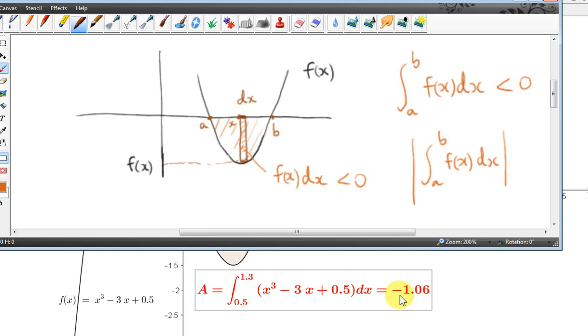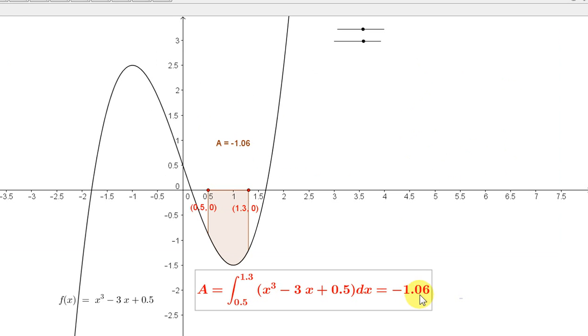In this case, the value of the definite integral is minus 1.06. But if you're just getting the area of this region, you would say the area is plus 1.06. You just make this quantity positive.